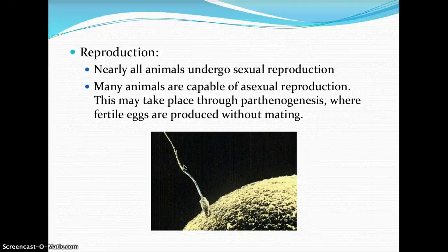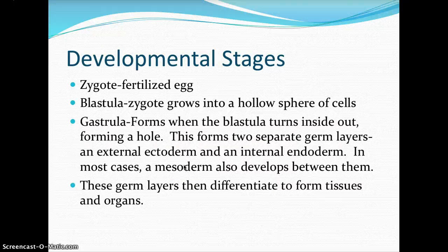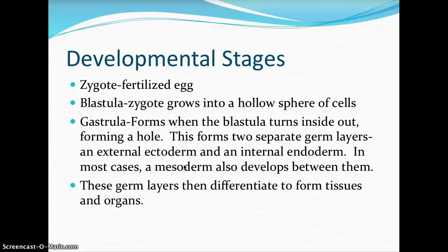Once fertilization occurs — once the sperm fertilizes the egg — you have the zygote, which is a fertilized egg. Animals then follow typical developmental stages. When the zygote grows into a hollow sphere of cells, that is the blastula stage. The blastula will then turn inside out and form a hole, creating two separate germ layers: the external ectoderm layer and the internal endoderm layer. In most animal development, a layer forms between them called the mesoderm.